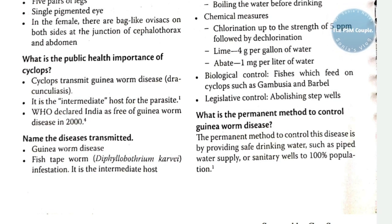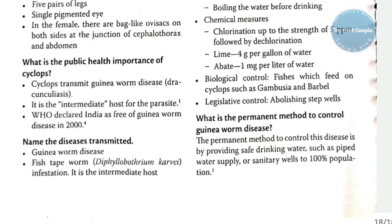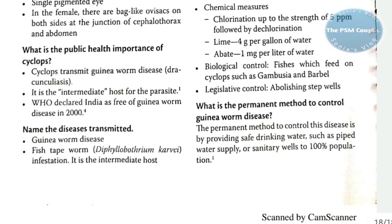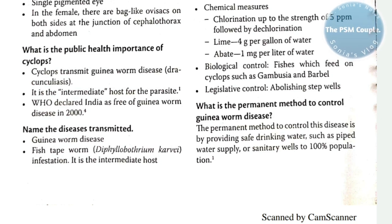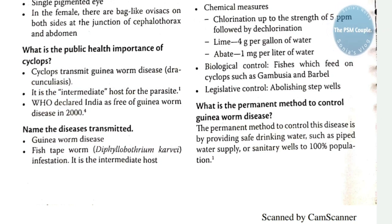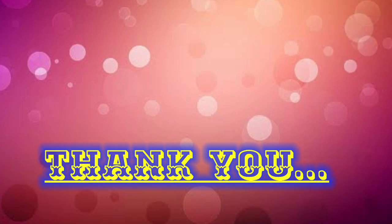The permanent method to control guinea worm disease is by providing safe drinking water — such as piped water supply or sanitary wells — to 100% of the population. We have now completed the spotters on entomology, covering mosquitoes, house fly, sand fly, louse, hard tick, soft tick, rat flea, mites, and Cyclops. Please go through the previous videos for any doubts. Thank you, have a nice day.